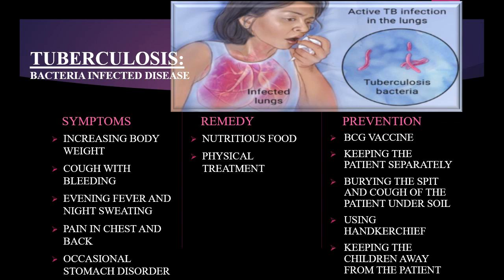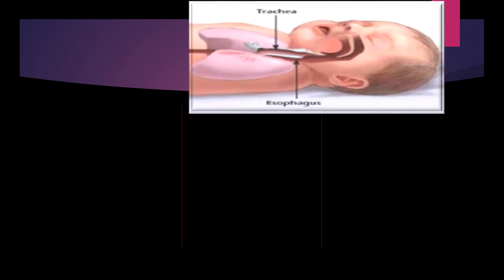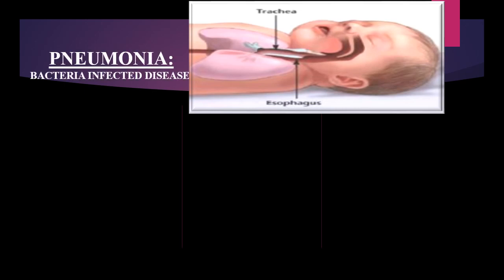Let's see the next disease. Here is a picture of a baby who is sick because it is infected very badly. One type of bacteria has infected its trachea, so the baby is suffering from respiratory problems. This disease is pneumonia — it is also a bacteria-infected disease.